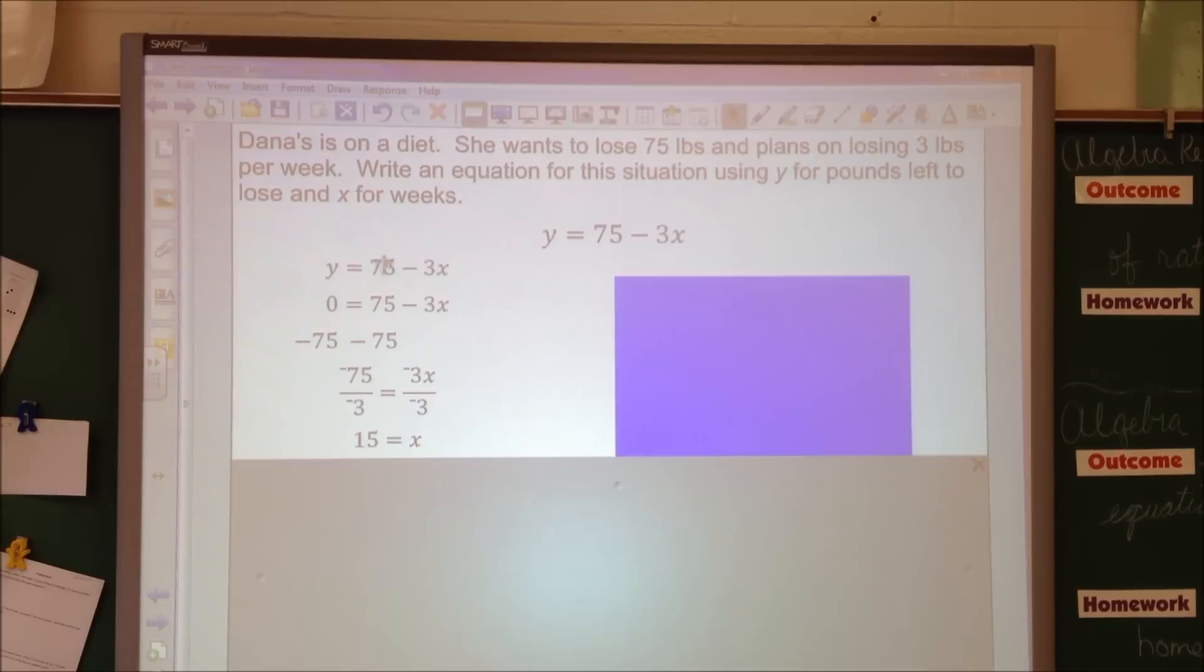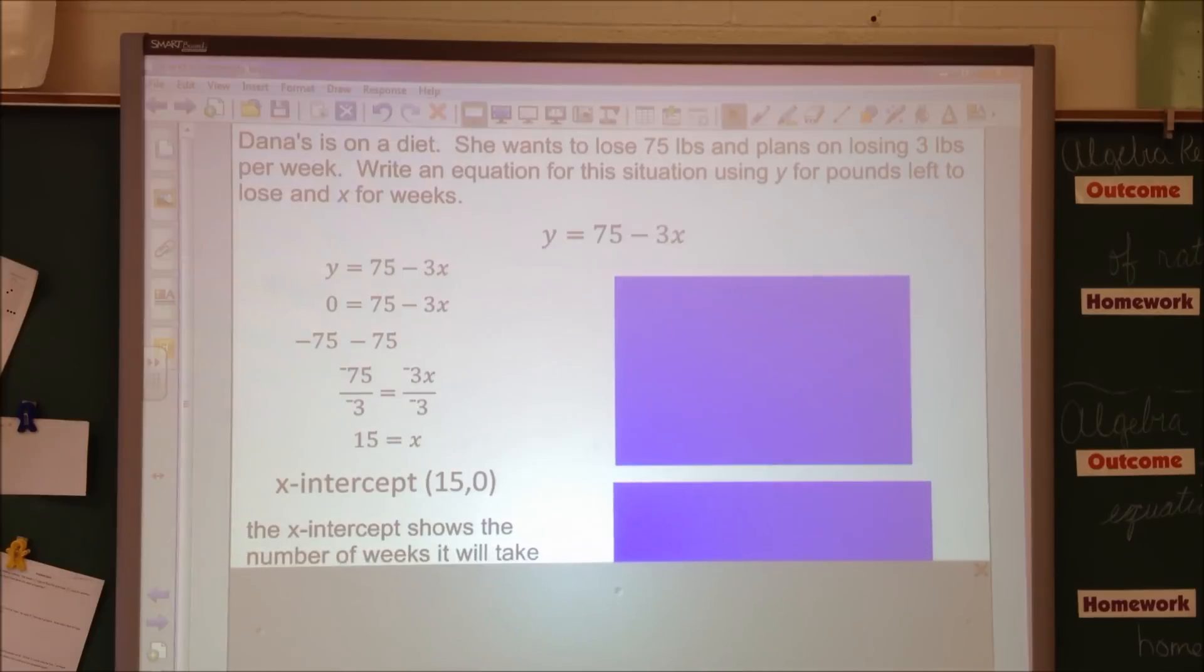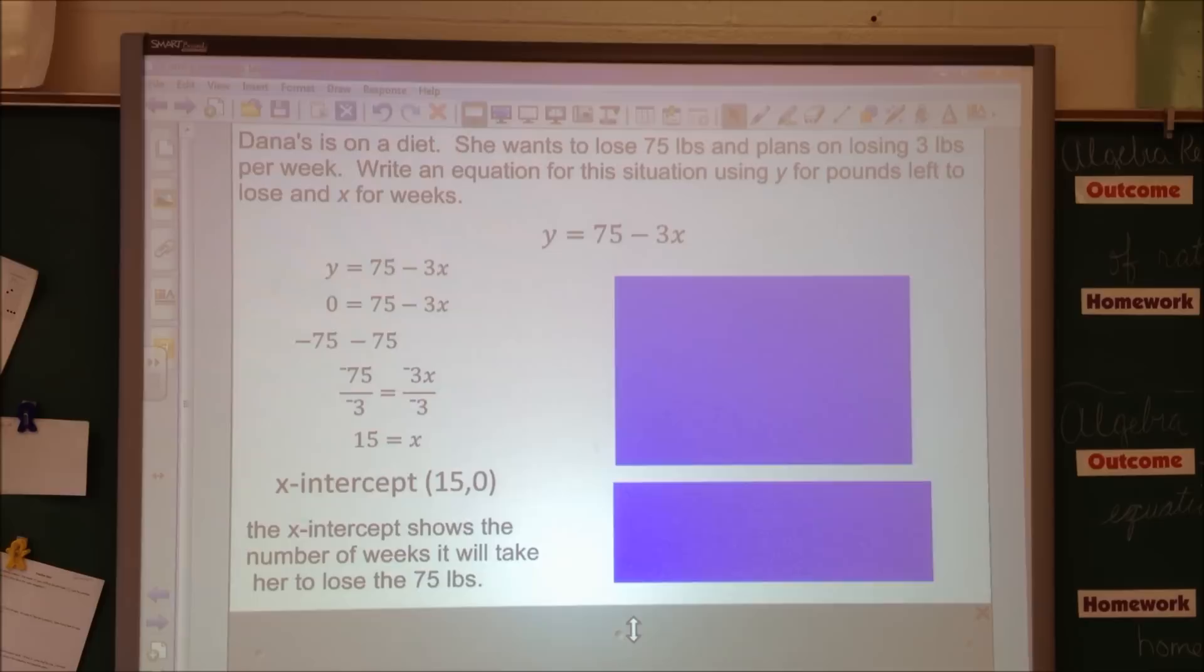So what does that 15 represent in this example? Well, at 15 we know x is weeks. So at 15 weeks, y is equal to 0. So y is the pounds. At 15 weeks, she will have lost the 75 pounds. She'll have no more pounds to lose at 15 weeks. And that's what the x-intercept means for this situation.